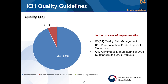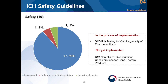In terms of ICH quality guidelines, three guidelines on quality by design have been translated into Korean and uploaded onto our website so anyone can download them. This hasn't yet been incorporated into our official public notifications. Q13 discussion still requires some additional discussion. S1B was introduced last year, but implementation is probably going to be complete sometime soon.